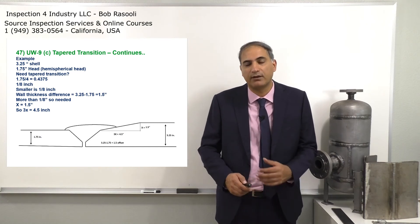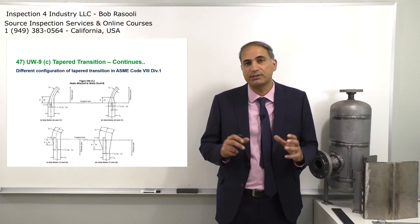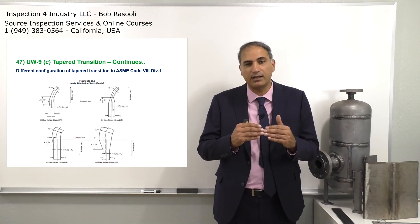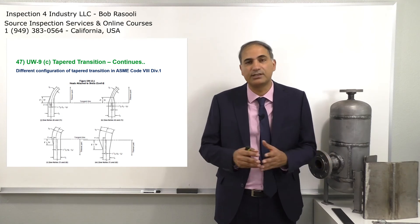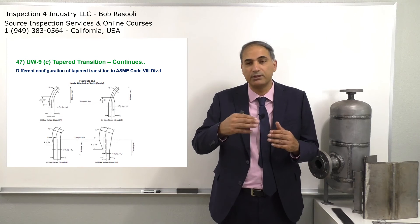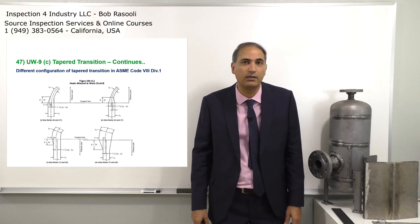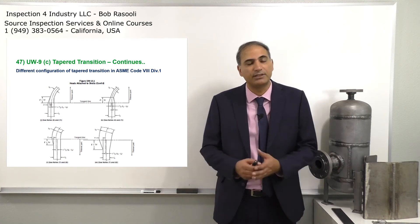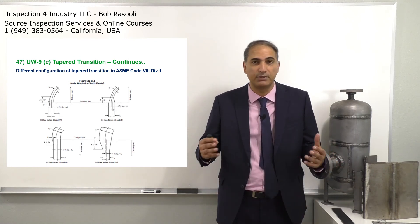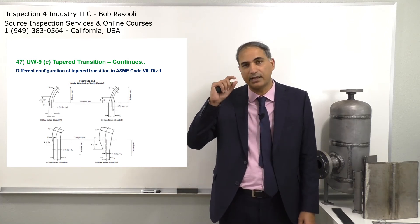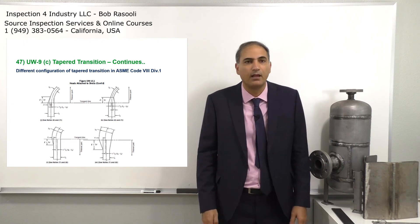There are different configurations for taper transition. ASME Section 8 Division 1, UW-9C, shows the simplest one: taper transition from the outer side. But the designer may divide the taper transition between both sides — inner and outer — or use a different configuration, as shown in the sketch. For exam purposes: the taper transition is 3-to-1. Consider X as the difference in wall thickness; then 3X is the length of the taper transition.